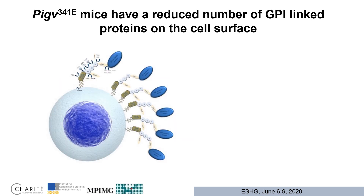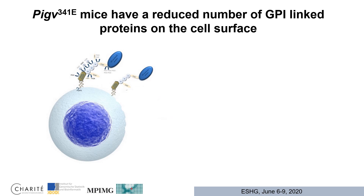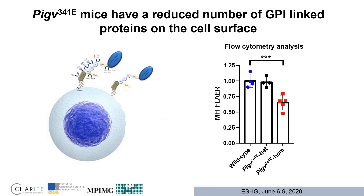We know from GPIBD patients carrying mutations in GPI-Anchor genes that these are hypomorphic, leading to reduced enzyme function, and GPIBD patients show a reduced number of GPI-linked proteins on the cell surface. To confirm this in the mouse model, we isolated mouse embryonic fibroblasts and analyzed them by flow cytometry. We stained the cells with FLAER, a toxin derived from bacteria that recognizes all GPI-linked proteins. PIG-V341E homozygous mouse embryonic fibroblasts showed a reduced mean fluorescence intensity in FLAER by approximately 35%, confirming that the GPI-Anchor defect is present in the mouse model and that the mutation is hypomorphic as in humans.